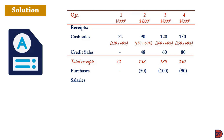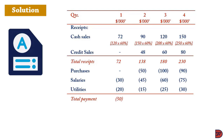Salaries are paid in the quarter incurred: 30,000 in Q1, 45,000 in Q2, 60,000 in Q3, and 75,000 in Q4. Utilities are also paid in the quarter incurred: 20,000 in Q1, 15,000 in Q2, 25,000 in Q3, and 30,000 in Q4. Total payments are: 50,000 for Q1, 110,000 for Q2, 185,000 for Q3, and 195,000 for Q4.